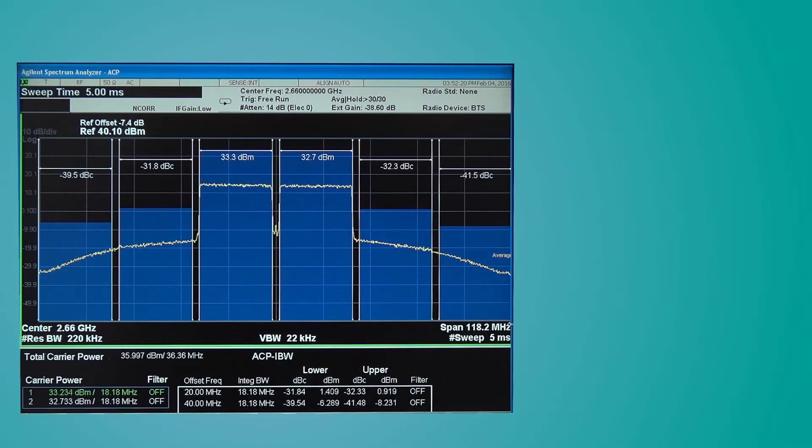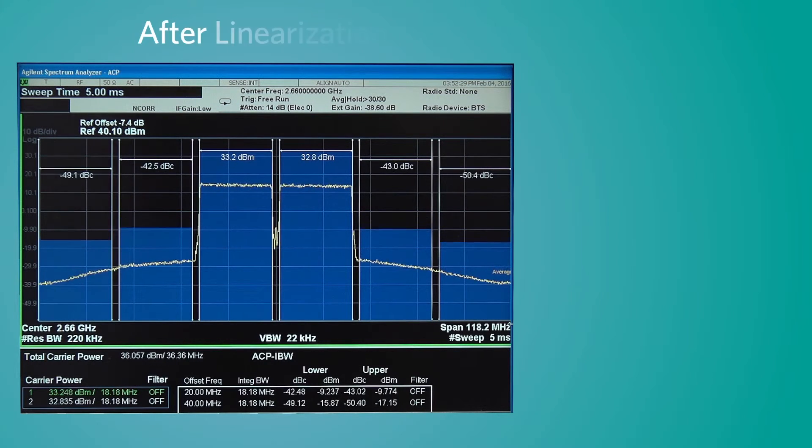Now let's move into the lab to the spectrum analyzer, which shows the ACLR improvement you can achieve with Maxim's pre-distortion technology. When linearization is turned on, we see a greater than 20 dB improvement.